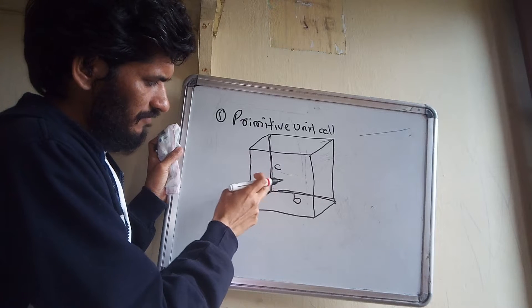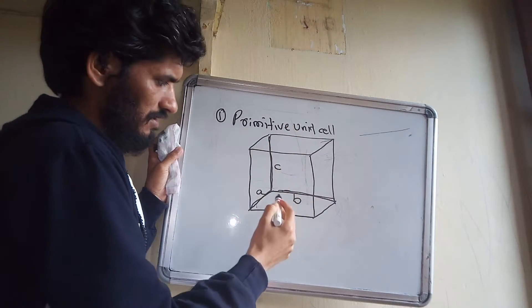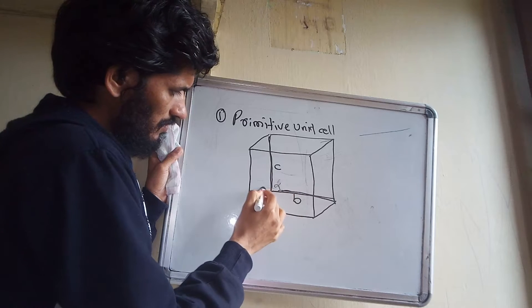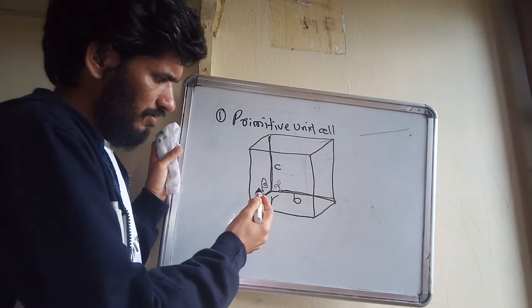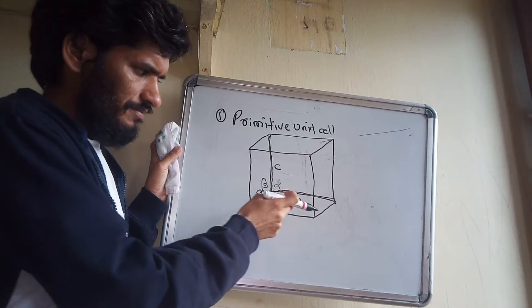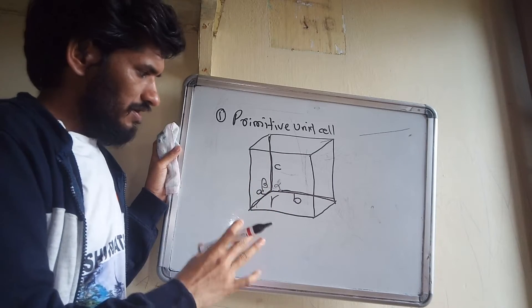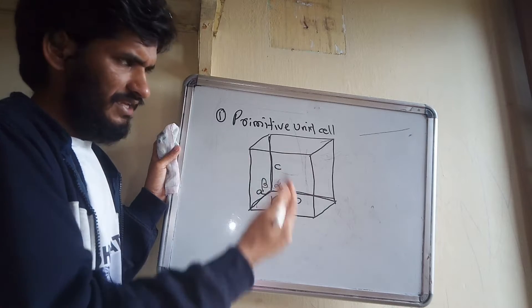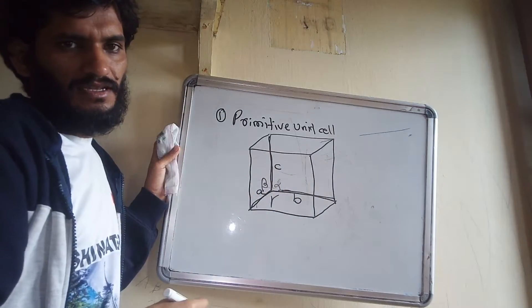There are three lengths which we label a, b, and c, and three angles — one, two, three — which we label alpha, beta, and gamma. You can write a, b, c anywhere on the diagram; it is not mandatory to put them in a specific position. The parameters a, b, c represent the length, breadth, and height of the unit cell.